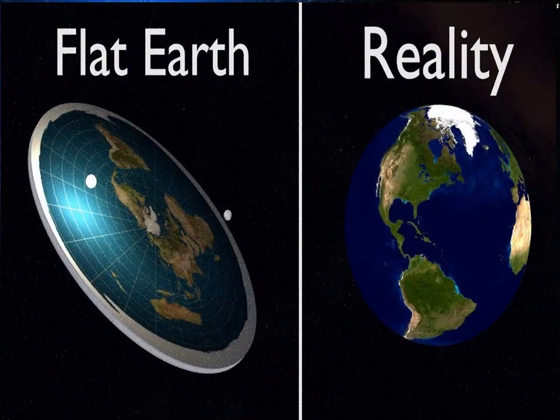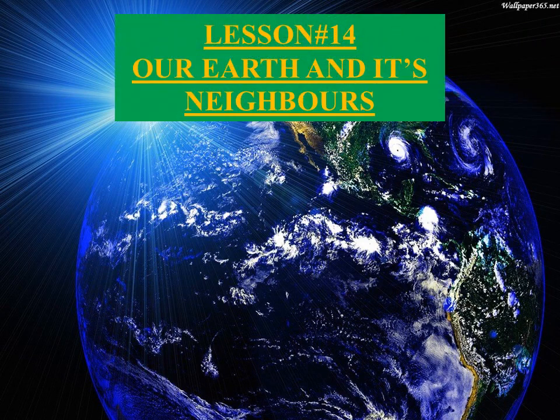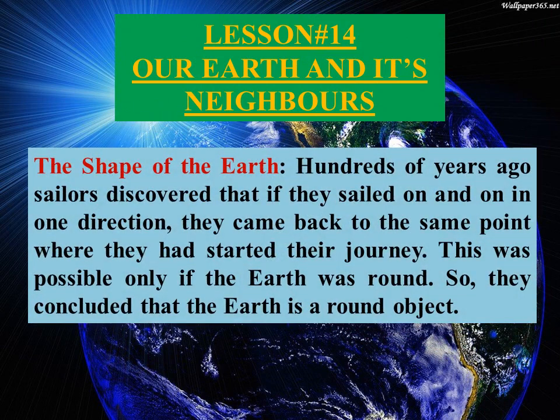Look at the picture. Hundreds of years ago, sailors discovered that if they sailed on and on in one direction, they came back to the same point where they had started their journey. This was possible only if the earth was round. So they concluded that the earth is a round object.